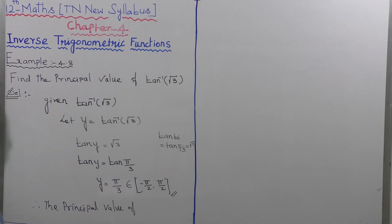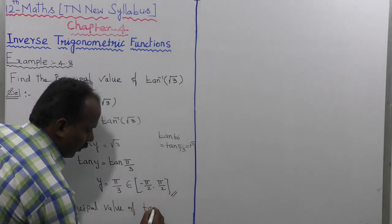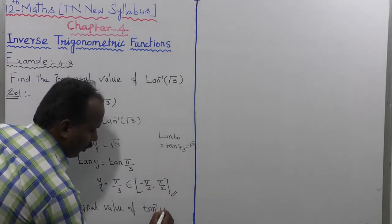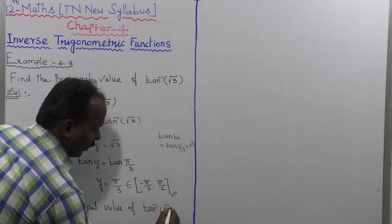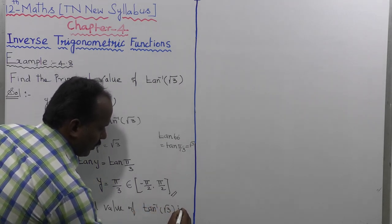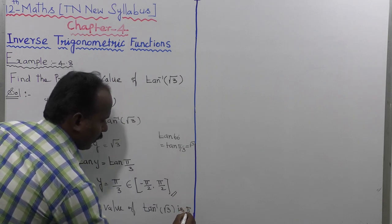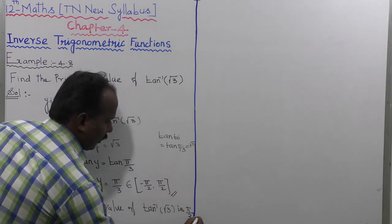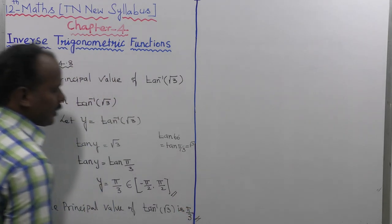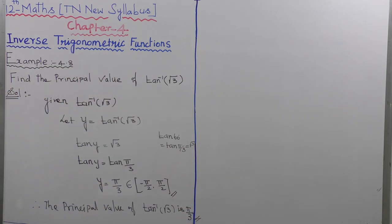Therefore, the principal value of tan inverse of root 3 is pi by 3, that is 60 degrees. That is our answer. Thank you.